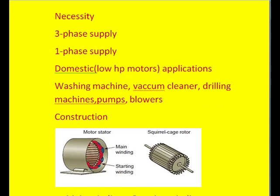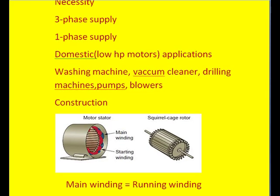Coming to the construction of the single phase induction motor, it will have two components. One is called the stator, the other one is called the rotor. Coming to the stator, this stator is just similar to the three phase induction motor stator, but it carries only two windings. One winding is called the main winding, the other winding is called the starting winding, that is also called auxiliary winding.